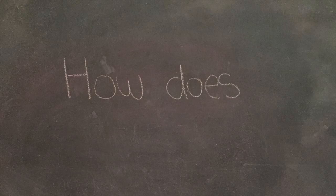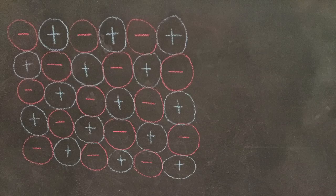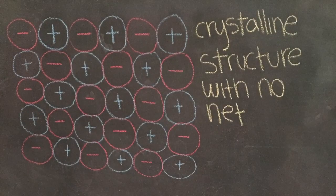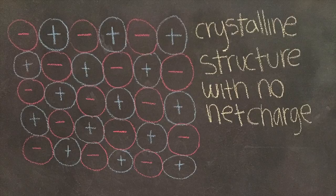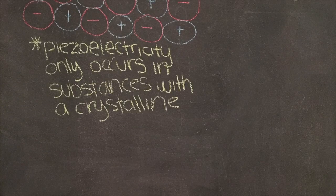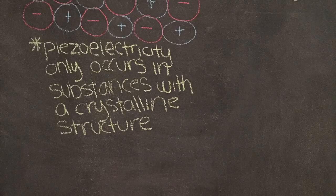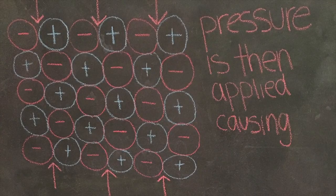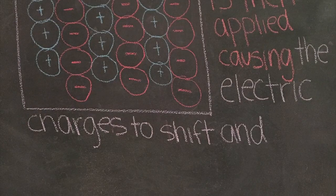Now you know a little bit about what it means, it's time to question how does it work. It first starts with a substance that has a crystalline structure and no net charge. This is because for every positive charge, there is a negative charge to perfectly balance it out. Piezoelectricity only occurs in substances with a crystalline structure — a crystal being any solid in which the arrangement of atoms is very orderly and goes on endlessly. When pressure is applied, the balance of charges shifts and becomes deformed, and therefore an imbalance between the charges is created.